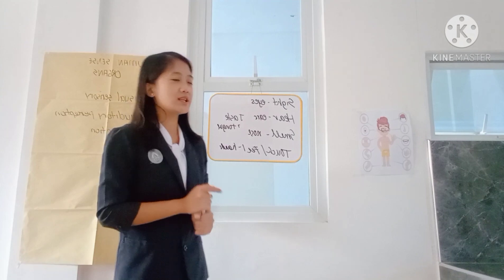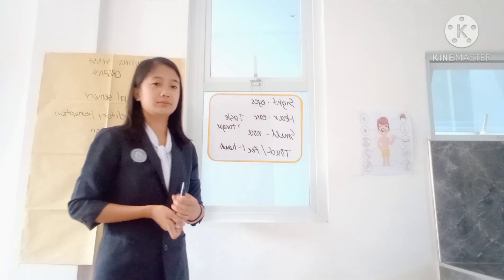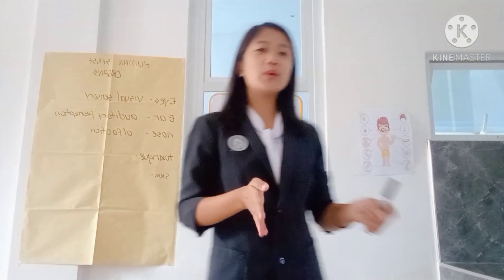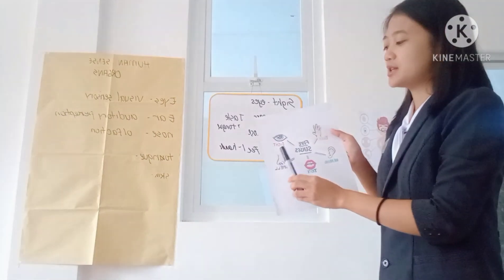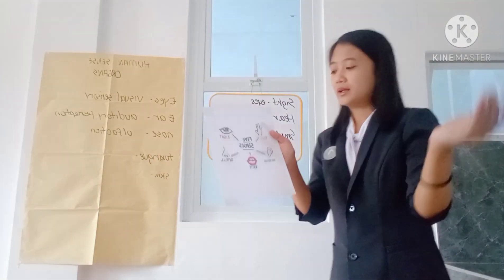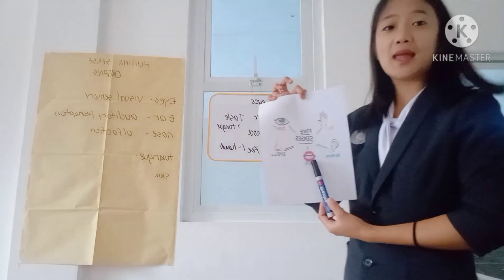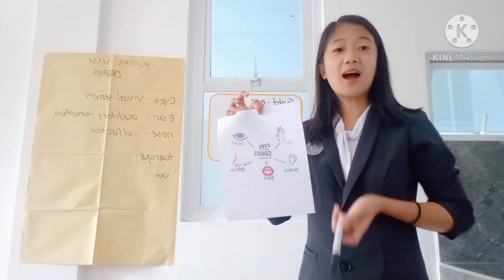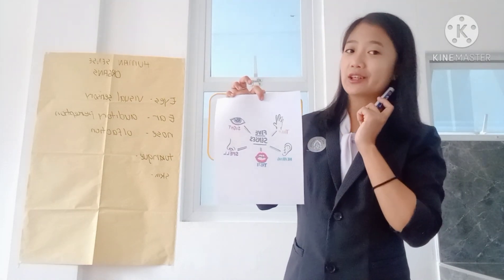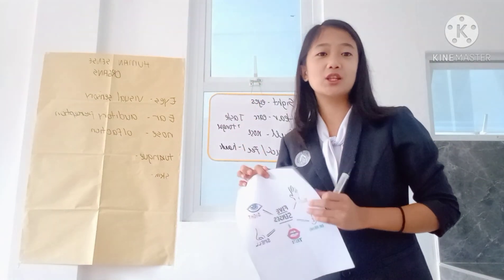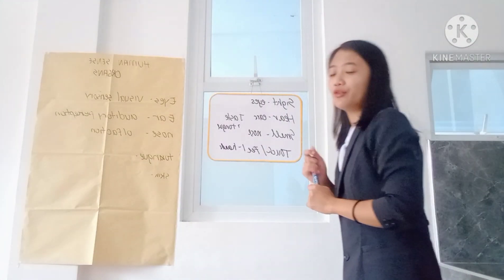Next, let's proceed to Group 2. The drawings that Group 2 have made show all the senses. The sense of sight is with the use of our eyes. The sense of smell is with the use of our nose. The sense of taste is with the use of our tongue. The sense of hearing is with the use of our ear. Lastly, the sense of touch is with the use of our hands. Very good. Let's give Group 2 applause.